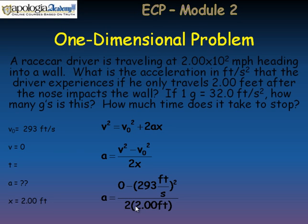But this time, the final velocity is zero. So we need 293 squared. And you need to make sure that you take the negative after the squaring. Because the object is slowing down, we would expect the acceleration to be negative here. And so rounding to three significant figures, you should get negative 21,500 feet per second squared.